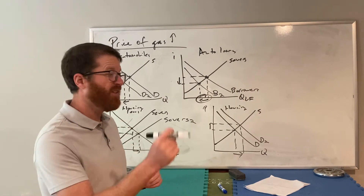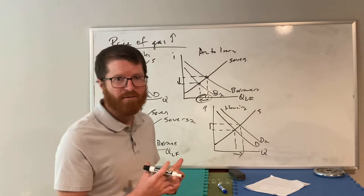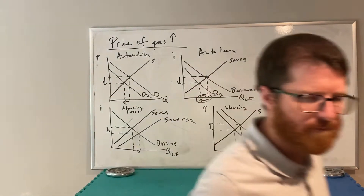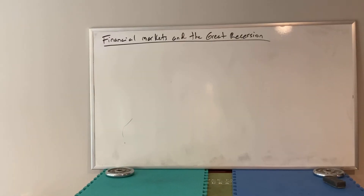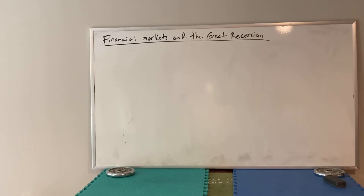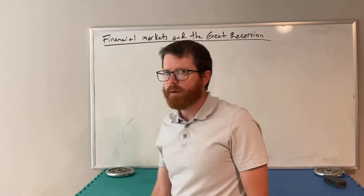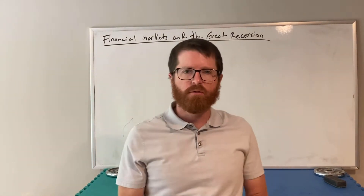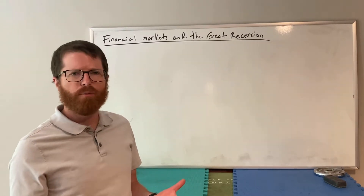There is one very specific case where general equilibrium theory does a really good job of explaining what happened. Let's go back to about 2005 to see a compelling example of general equilibrium theory in practice.